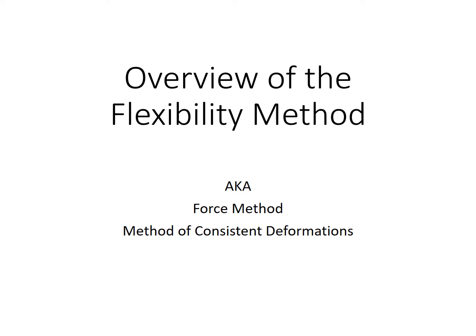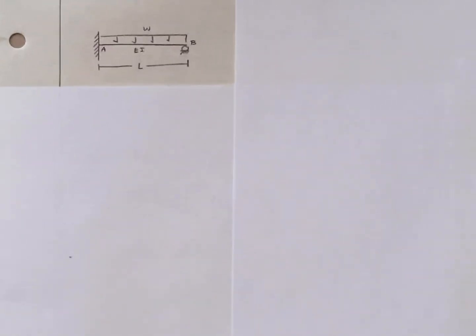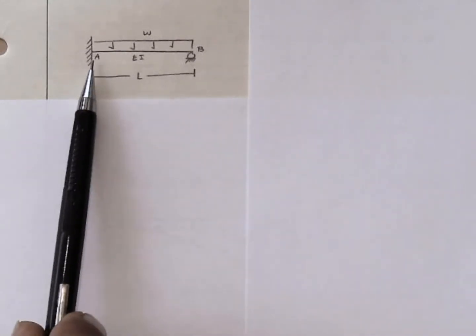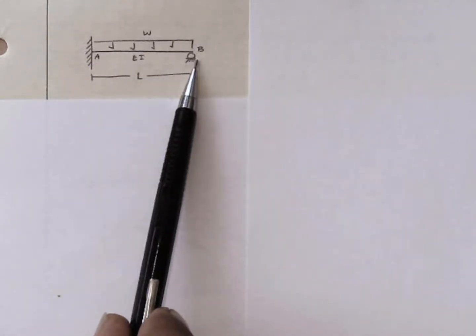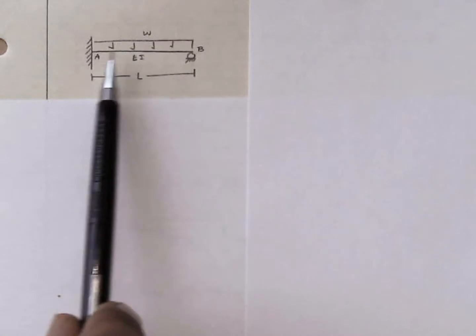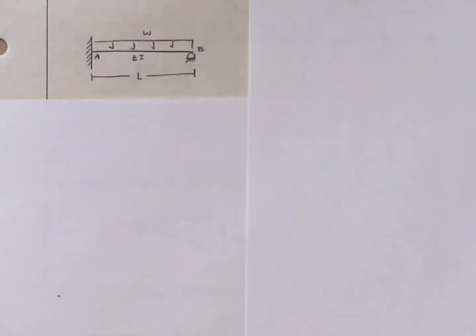Let's switch to pencil and paper. Here I have the example that we'll be looking at. It's a propped cantilever beam, fixed support at one end, roller at the other end. The ends are called A and B, cross-sectional properties EI, uniform load W over the full length of the beam, length L.